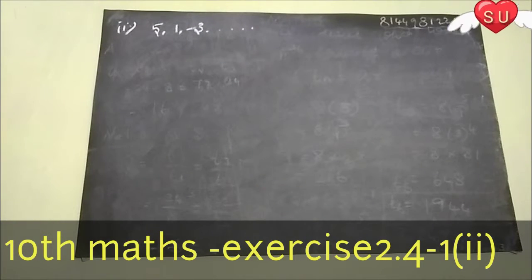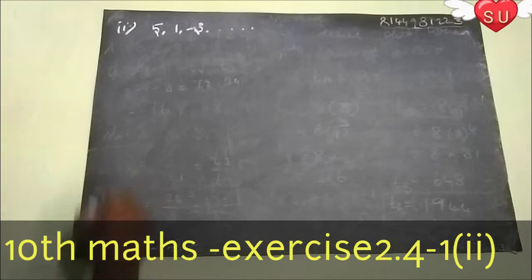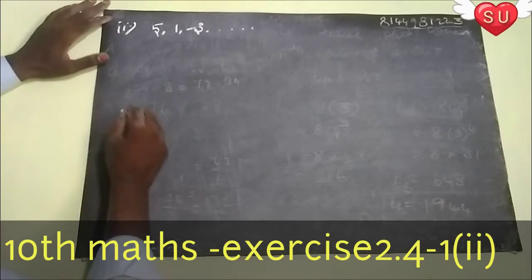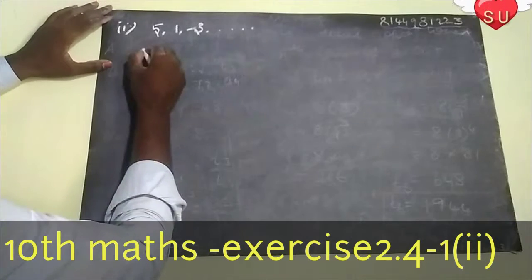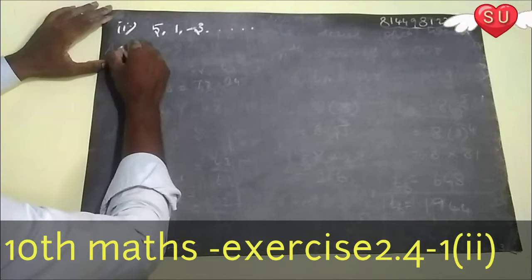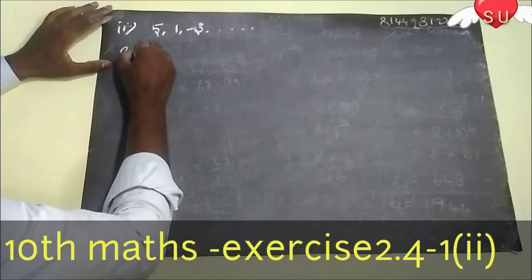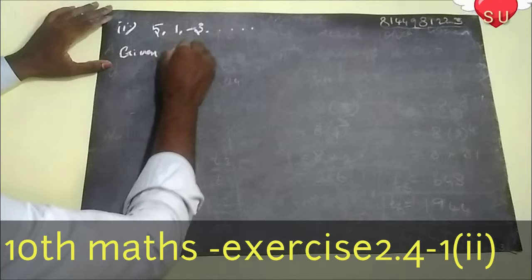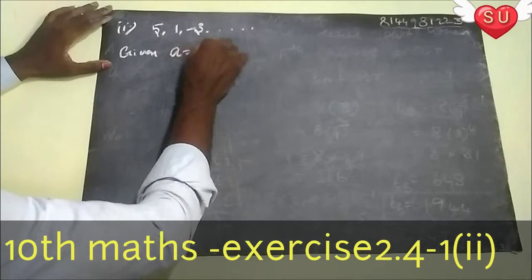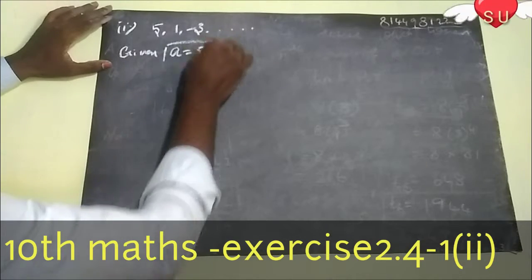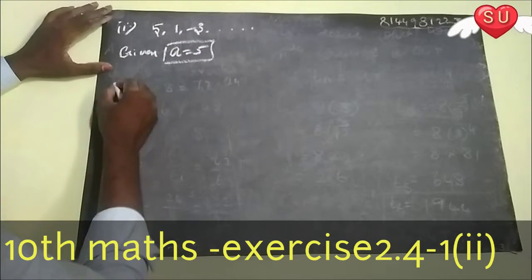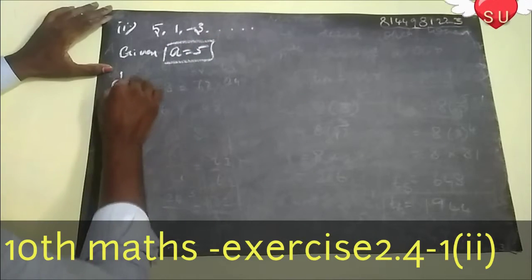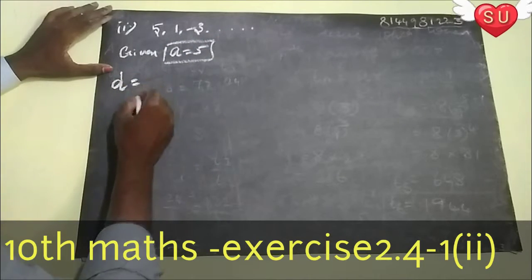So, next terms we will find out. Firstly, this is AP. So, given a is equal to 5. Next, difference find out.